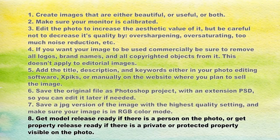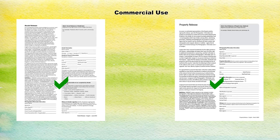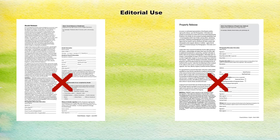Number eight: get a model release ready if there is a person in the photo, or get a property release ready if there is private or protected property visible in the photo. You will need this for all commercial images containing people or private and protected property. For editorial images, however, you don't need any of these forms — you can just upload the photo.